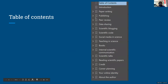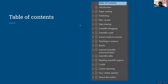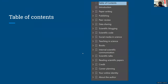I'm going to assume most of you will just read it on the website or as a PDF. The table of contents has quite a bit: paper writing, publishing, peer review, data sharing, scientific blogging, scientific code, social media science, teaching in science, books, internal scientific communication, scientific talks, reading scientific papers, credit, career planning, and your online identity.